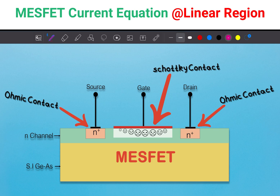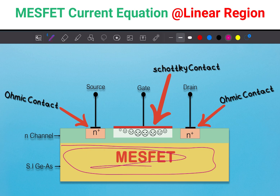Just think like this: here in this layer, there is no other effect on the current. So you just think about this area for the current calculation. What I will do is I just rotate this area.